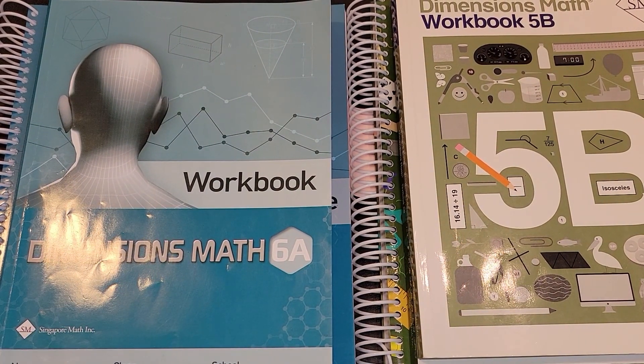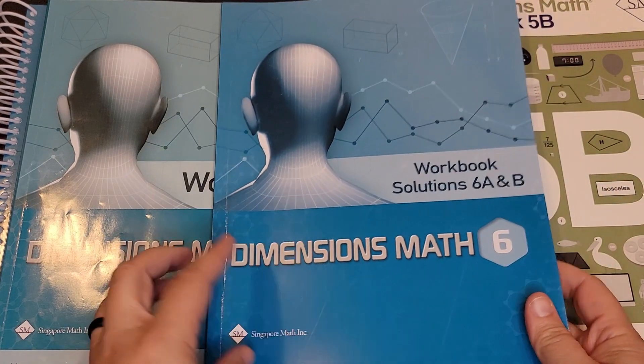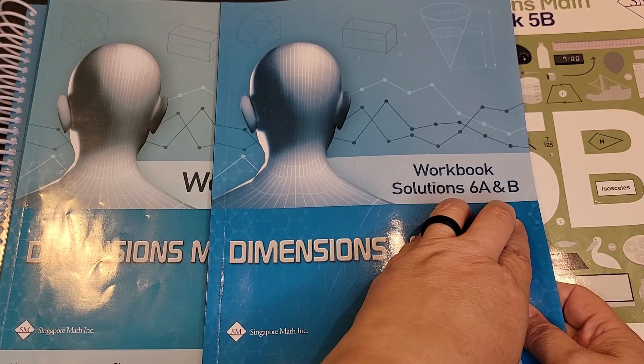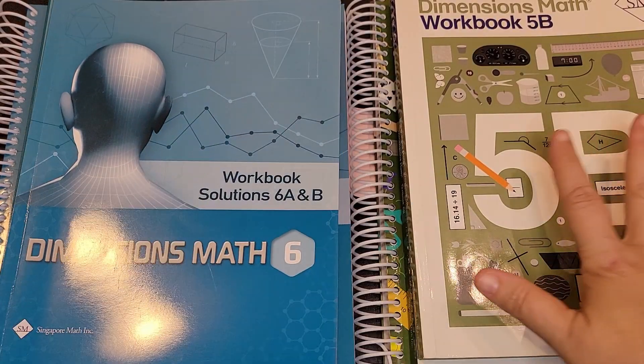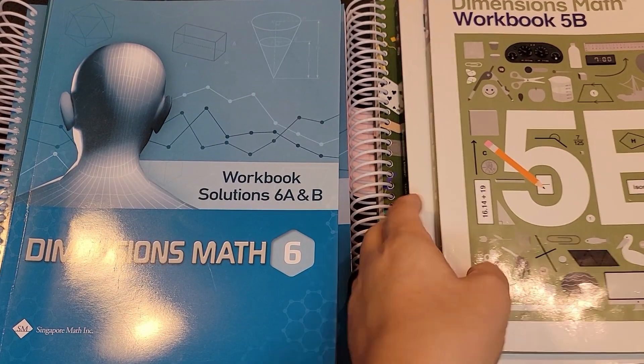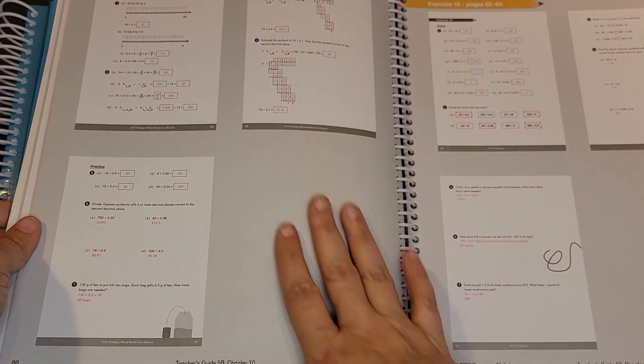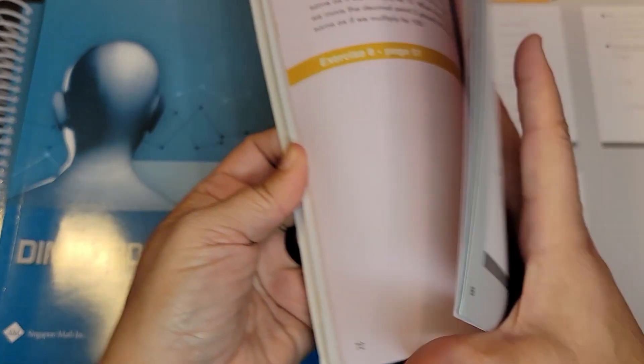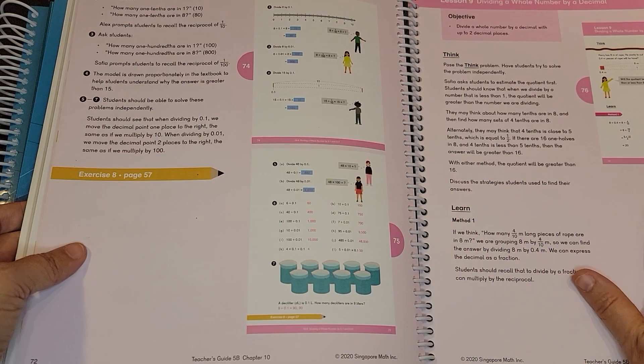Now there is a difference with regards to the workbook answers. For six you have the answers for A and B in a separate booklet, but in five your answers for your workbook are included in the teacher's manual. So you can see these gray pages are your workbook pages. You have the answers to the textbook pages in this area.